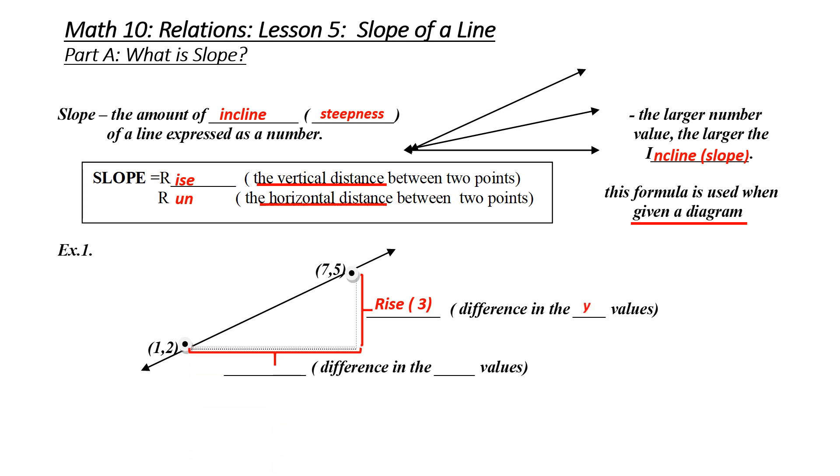To calculate my run, I calculate the difference between the x values. I'm going from 1 to 7. That means my run is going to be 6, which is the difference in the x values. I write out my formula. Slope is equal to rise over run. My rise is 3. My run is 6. I always have to reduce my slope, which gives me a slope of 1 half.